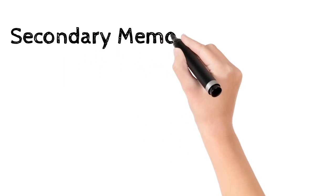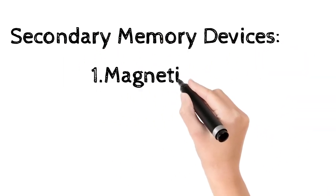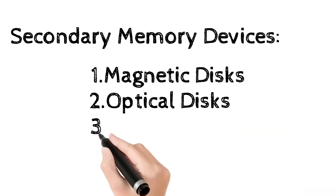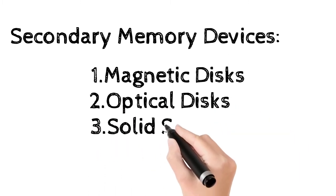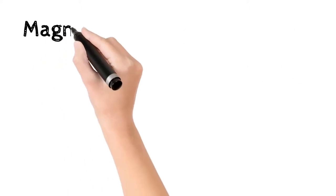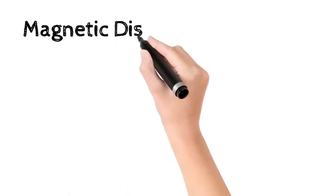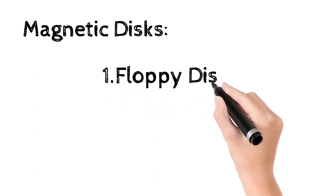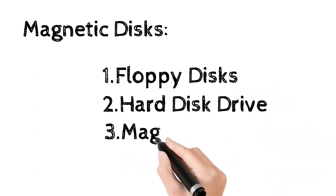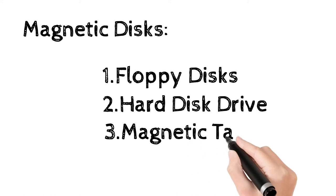There are three types of secondary memory devices: magnetic disk, optical disk, and solid state. Let us first look at some magnetic disks in detail. Commonly used magnetic disks are floppy disk, hard disk, and magnetic tapes.